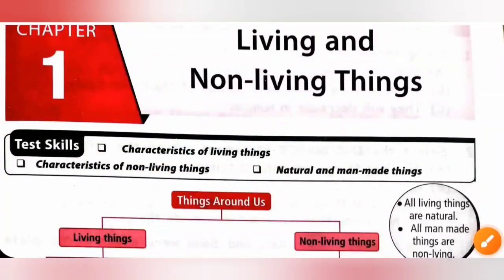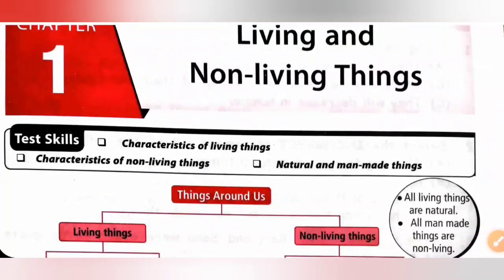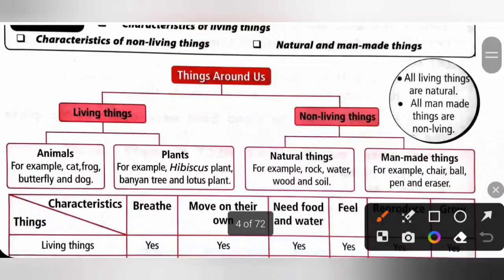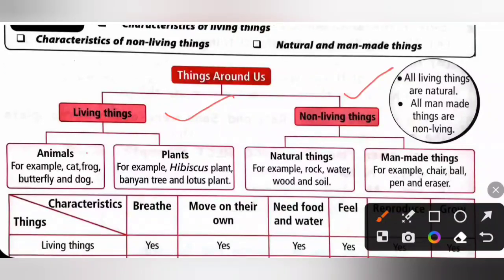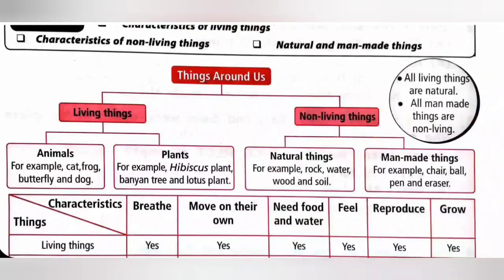Hi my dear kids. In this video we are going to see chapter 1, living and non-living things from MTG workbook of class 1 NSO. Things around us are divided into two categories: living things and non-living things. Living things are classified into animals and plants. Non-living things are classified into natural non-living things and man-made things. All living things are natural and all man-made things are non-living.